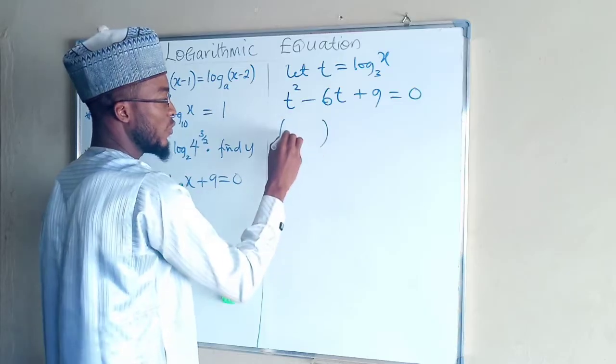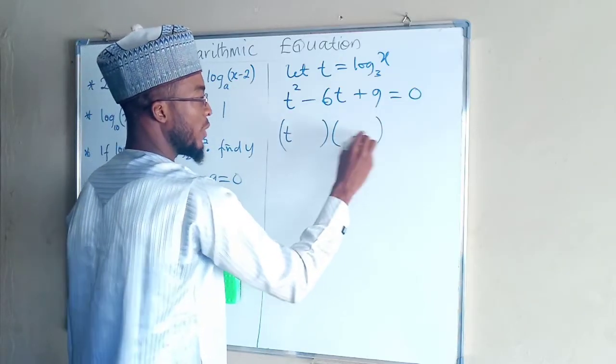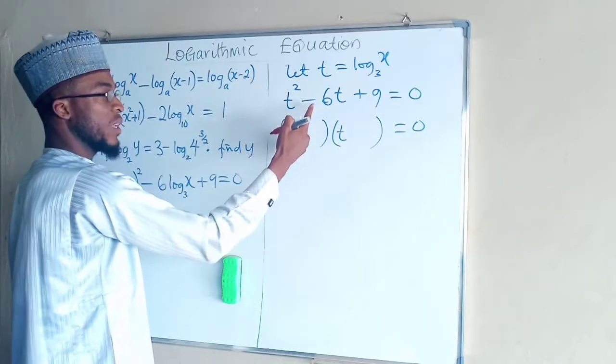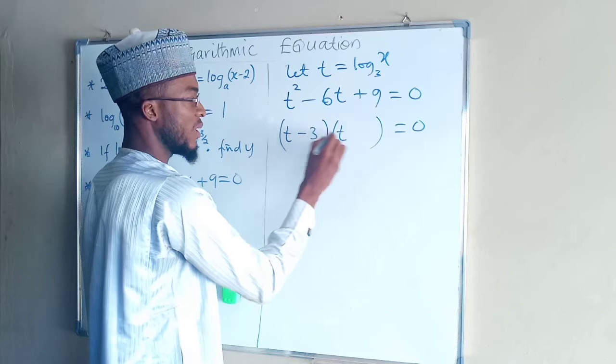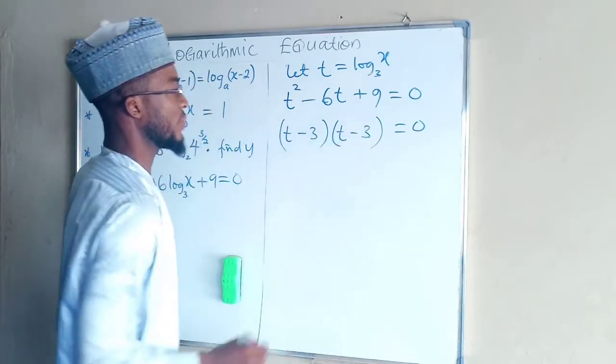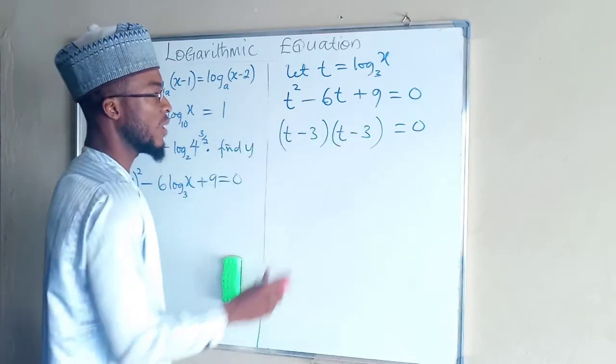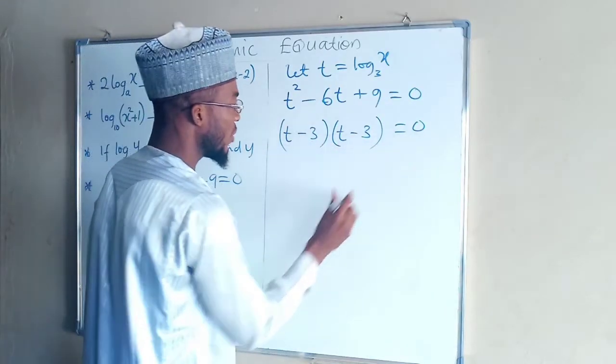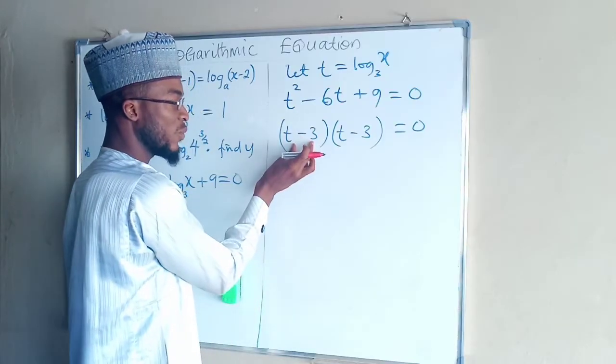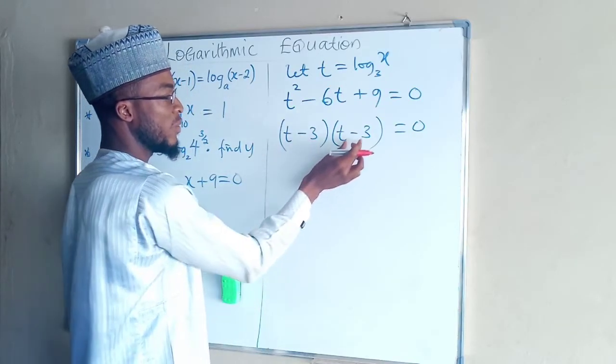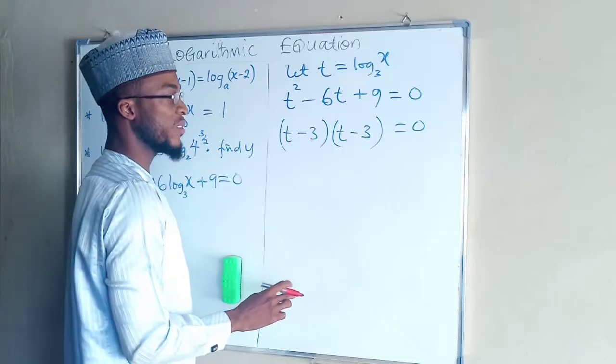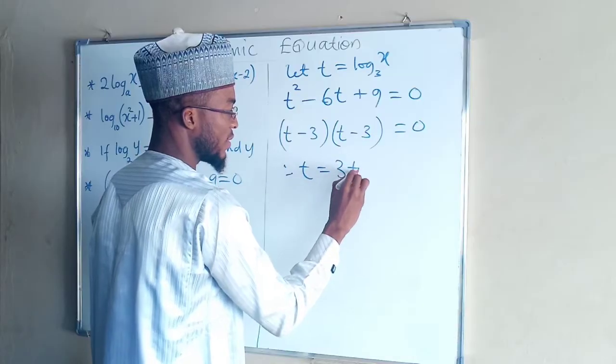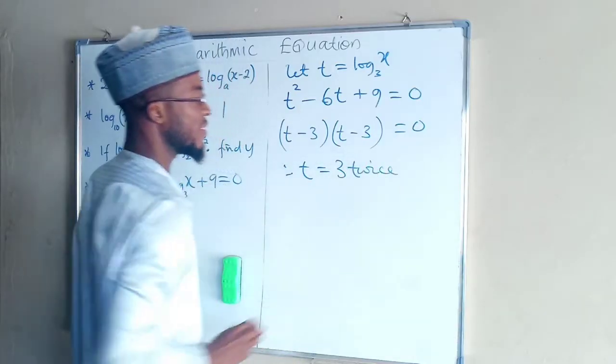Then we need to think of two numbers which when we multiply them we get 9, and when we add them together we get negative 6. So the numbers are negative 3 and negative 3. This is a quadratic equation that we need to solve by factorization. So we are going to set each of these to be equal to 0. If you set this one you are going to get 3. If you set this one again to be equal to 0 you are still going to get 3. Therefore t equals 3 twice, all having the same value.